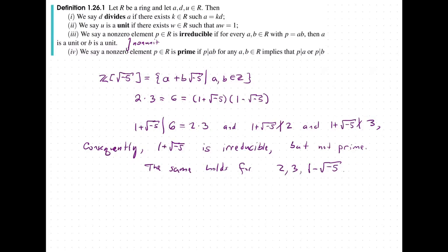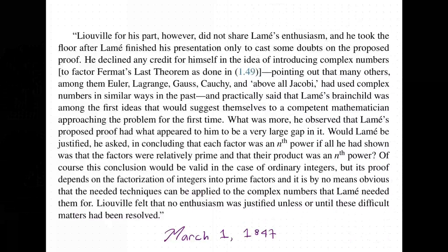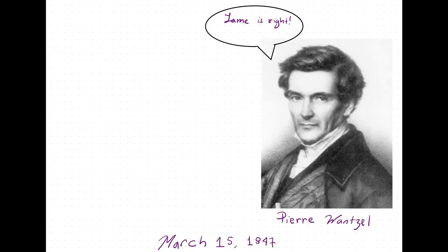Not everyone sided with Louisville. This led to a row at the Paris Academy of Science. There were mathematicians like Pierre Wenzel who said LeMay was right. Fifteen days later Wenzel gave a lecture claiming Gabriel LeMay's work was verified. What Wenzel did was show that the integers adjoined the second root of unity, the third root of unity, and the fourth root of unity are all unique factorization domains. And he concluded that because these three are UFDs, it automatically follows that for any n greater than or equal to five, the integers adjoined the n-th root of unity is also a UFD.